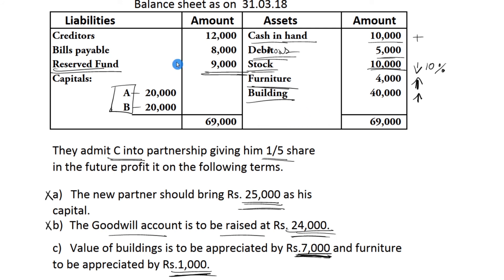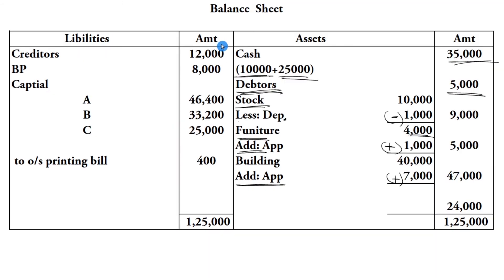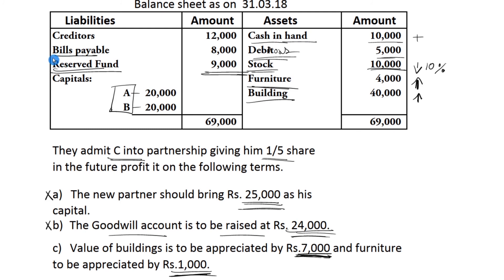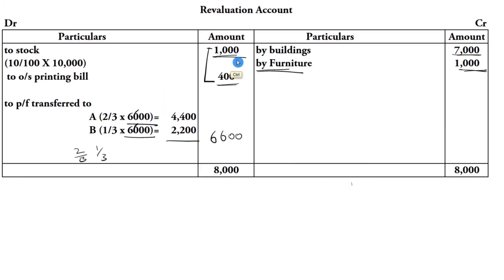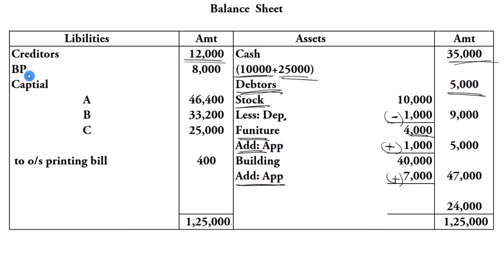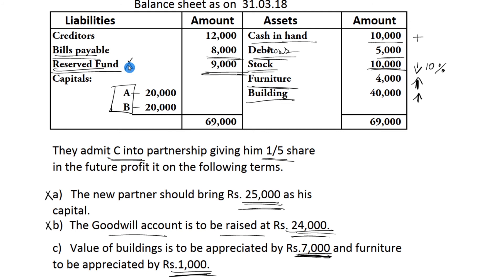Liabilities side of balance sheet: creditors 12,000. Bills payable 8,000 rupees. Reserve fund is already transferred to partners capital, so it does not appear separately. Partners capital accounts for A, B, and C are shown at their updated amounts.